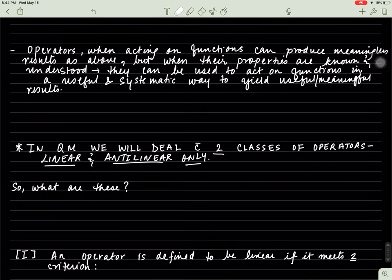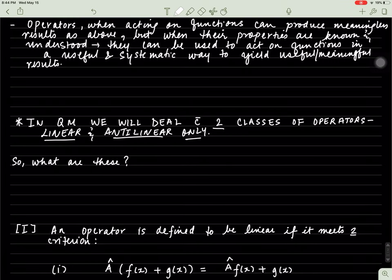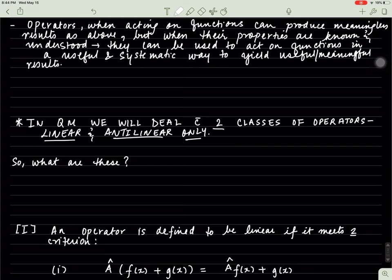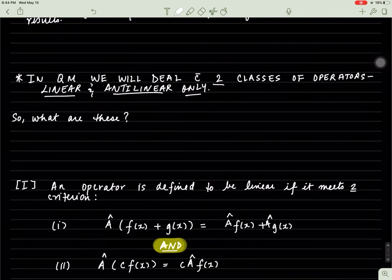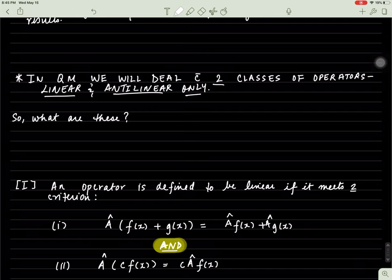What does it mean to be a linear operator? An operator is defined to be a linear operator if it meets two criteria. The first criteria is that when the operator acts on a sum of two functions, it acts on both functions as such: it will act on f of x and it will act on g of x. The second rule is that when this operator acts on some constant multiplied by a function, you can write the equation as the operator just acting on the equation and the constant being pulled out. This is what makes a linear operator.